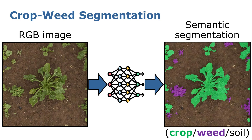State-of-the-art methods for crop-weed semantic segmentation are fully supervised, meaning that we require labels to train the network. However, this also means that every time we would like to deploy a new domain, we have to label new data.